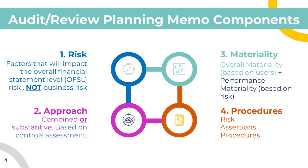The next section is the approach. There are only two choices. The first is substantive testing — completing audit procedures that examine the financial statements and supporting documentation to see if there are errors. The next is the combined approach, which is a combination of substantive testing and controls testing. Controls testing means you test the company's controls to see if they can be relied upon. The tip here is that you want to use case facts to support whether you're using a combined approach or a substantive approach.